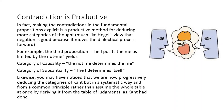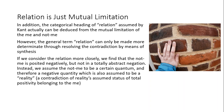For example, the third proposition — the I posits the me as limited by the not-me — can yield two more categories: that of causality, or the not-me determines the me, and the category of substantiality, which is the I determines itself. You might have noticed that we are now progressively deducing the categories of Kant himself, but we're doing it in a systematic way and from a common principle, rather than just assuming the whole table at once by deriving it from another table of judgments as Kant had done in the Critique of Pure Reason. In addition, the categorical heading of relation, assumed by Kant as a sort of generic bundle of three other categories, is something which Fichte found he actually could deduce from the mutual limitation of the me and the not-me.